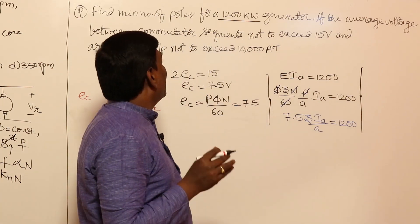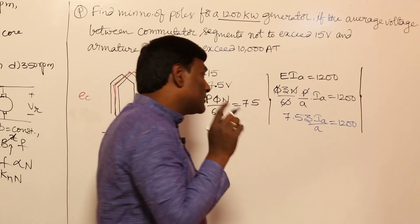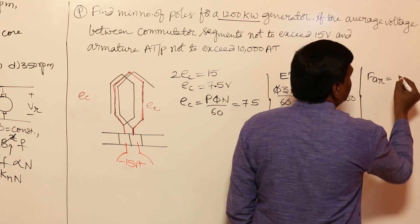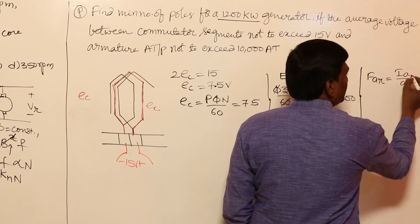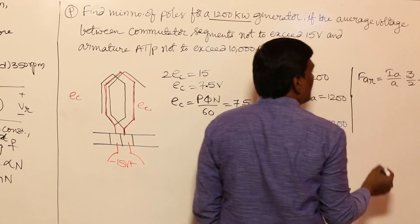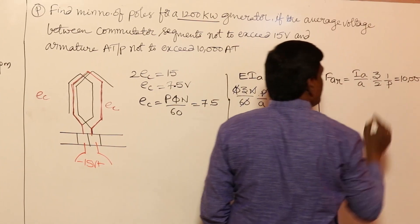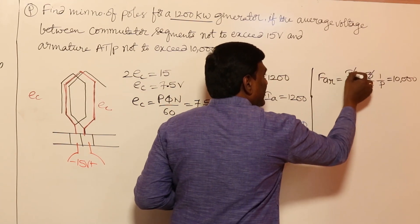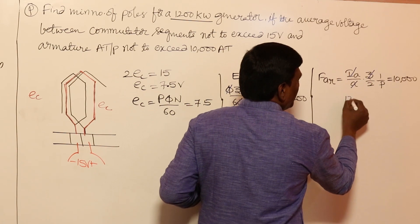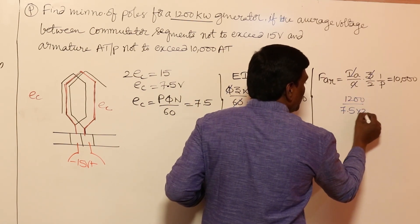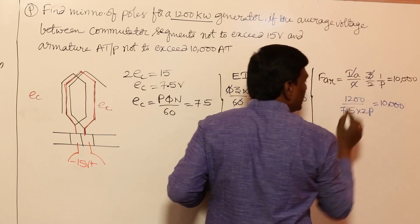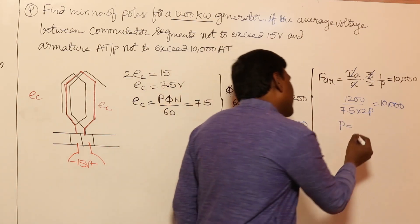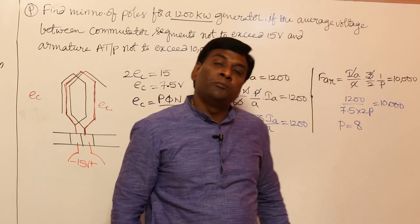The armature ampere-turns per pole F_ar must not exceed 10,000. F_ar = (Z × I_a) / (2 × a × p). Substituting Z × I_a / a = 160,000: F_ar = 160,000 / (2p) = 10,000. Solving: 2p = 160,000 / 10,000 = 16, so p = 8. The minimum number of poles is 8 — a very beautiful problem.